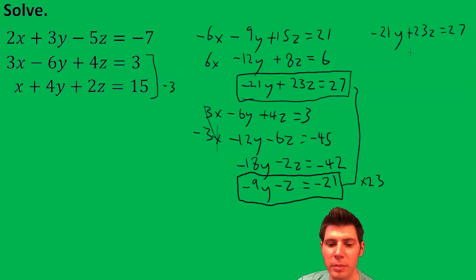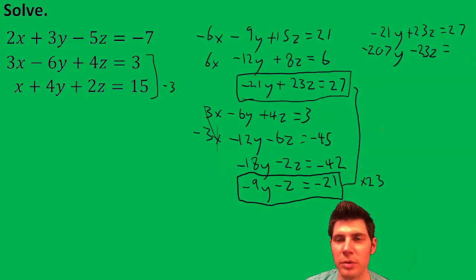Then multiply everything by 23. Negative 9 times 23 is negative 207y minus 23z equals... And 21 times 23 is 483. Negative 483.